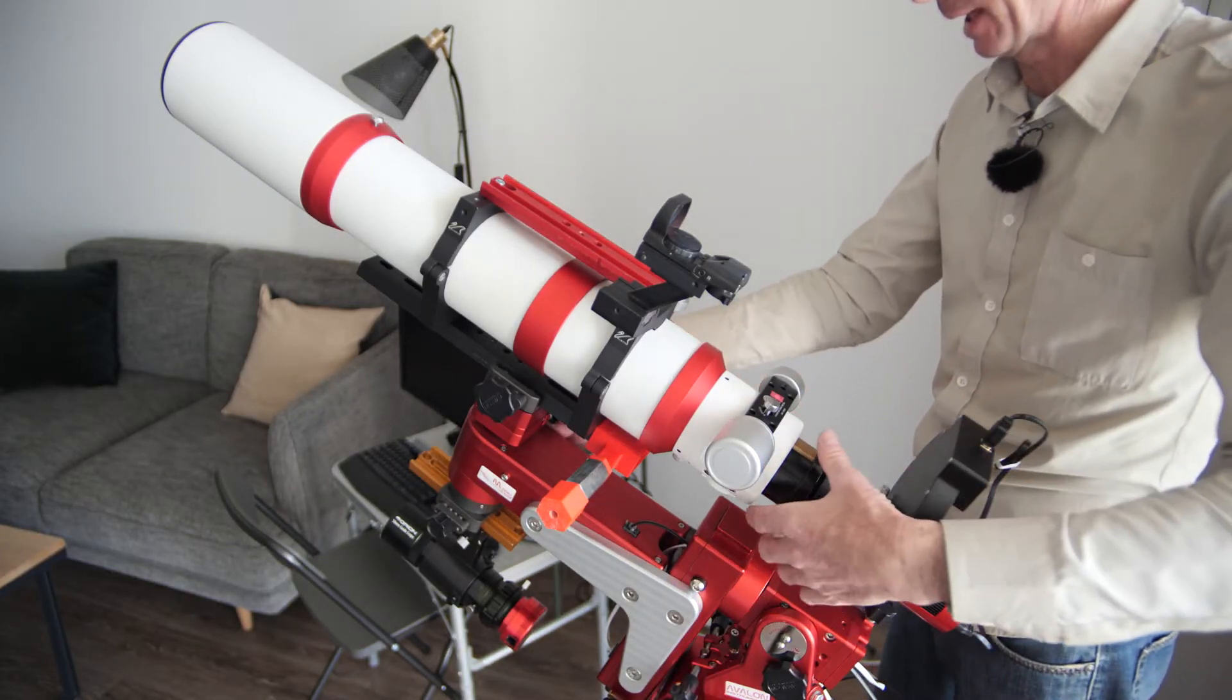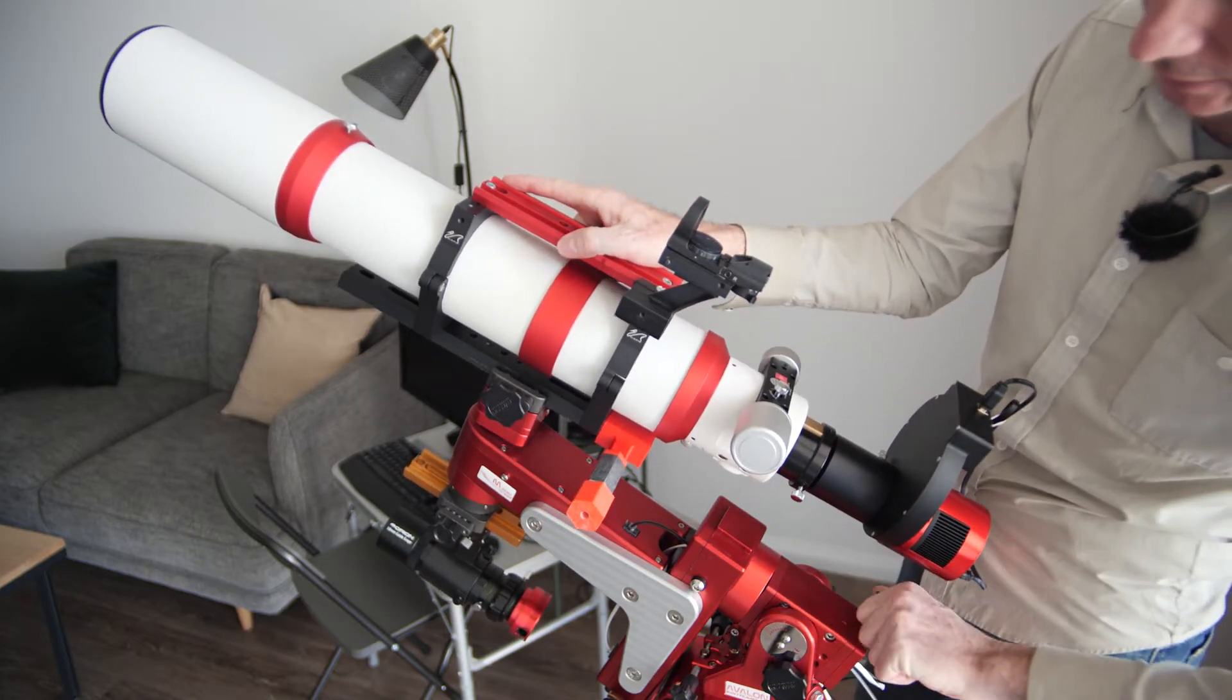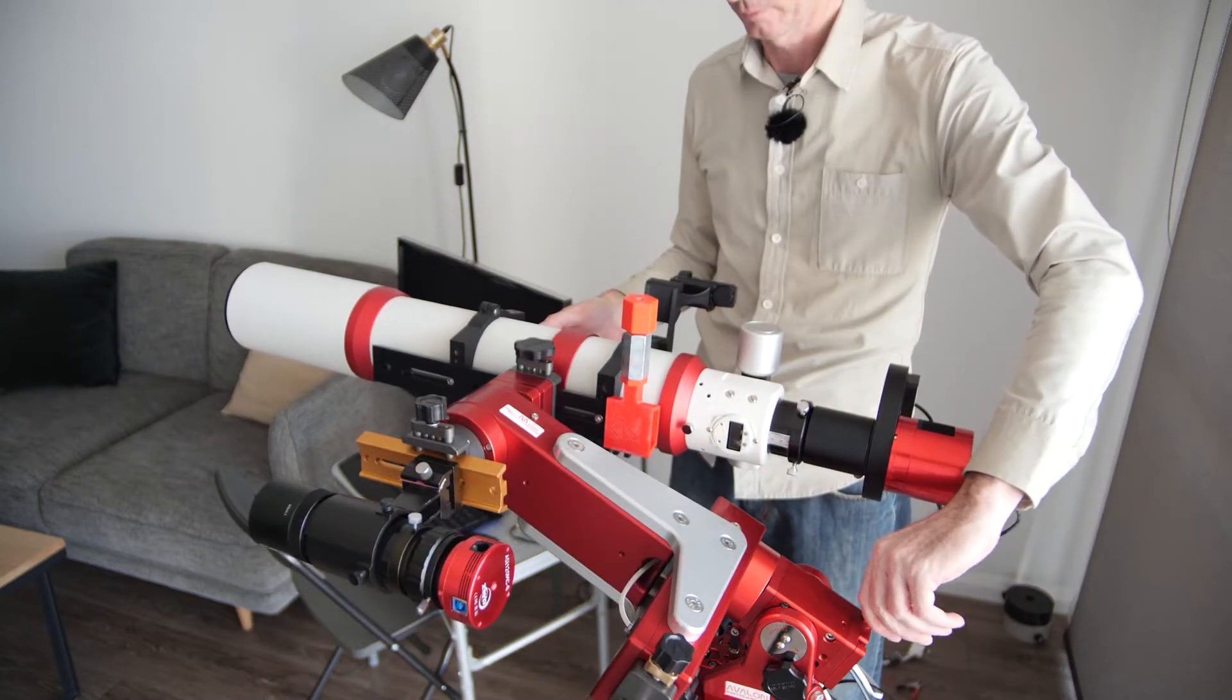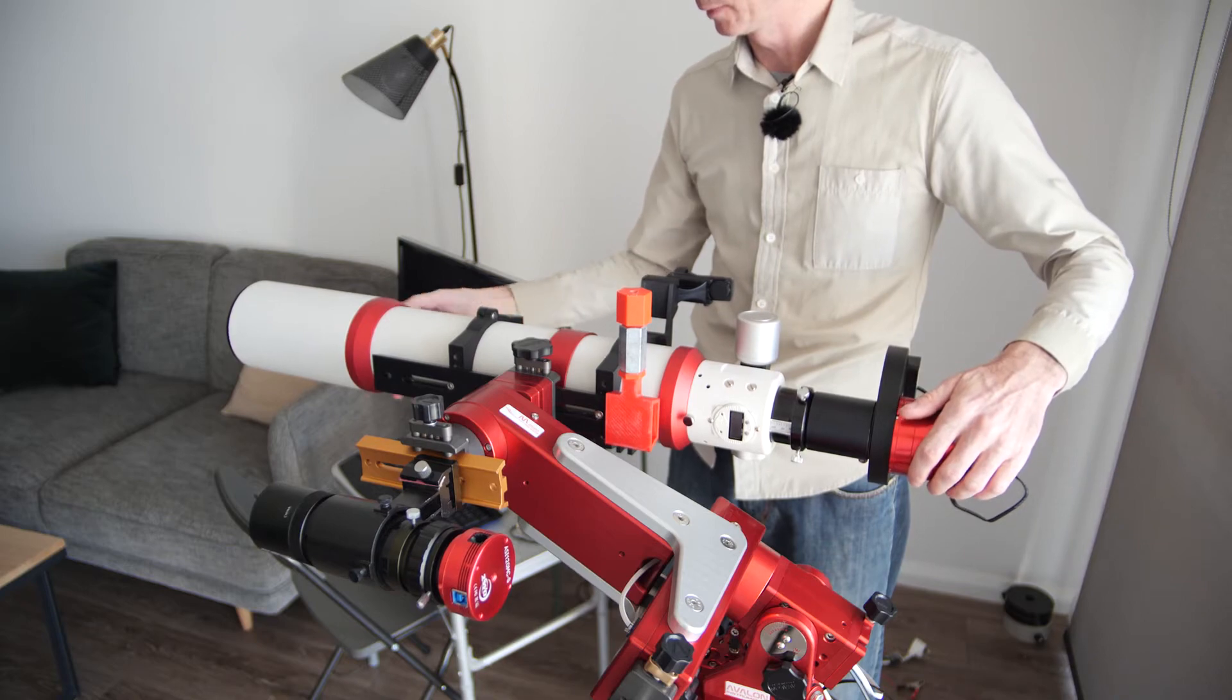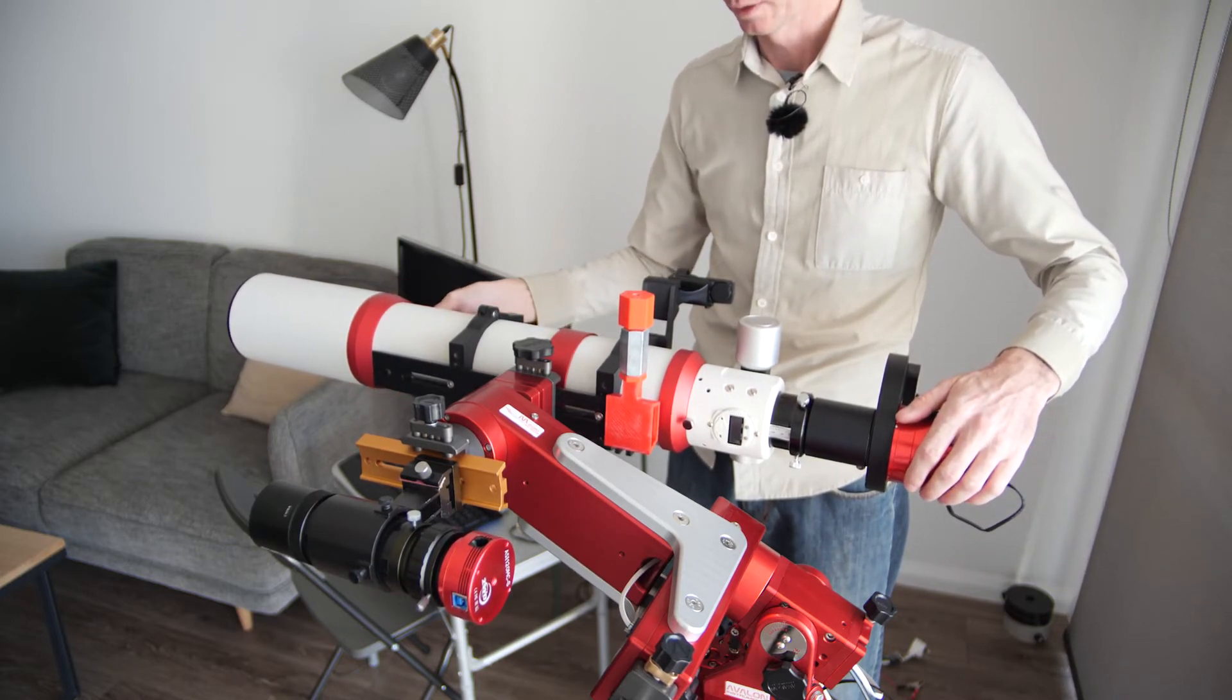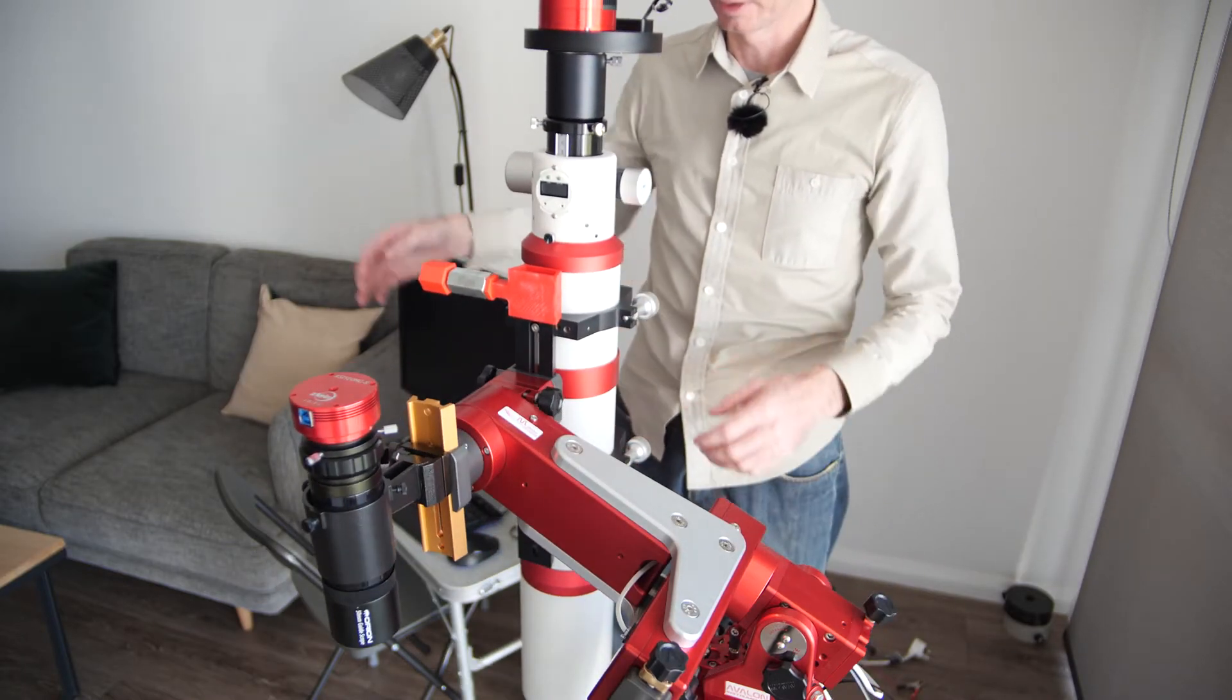We can then look at balancing the scope, so just disengage these clutches. It's a little bit nose heavy, so we'll just drop that back a little bit. So it's a little bit nose heavy but it's okay. That's balanced now, so there's no moment.